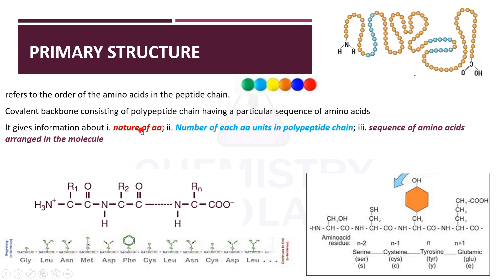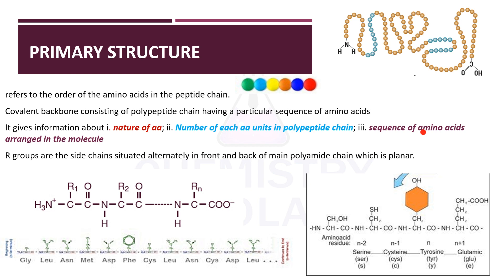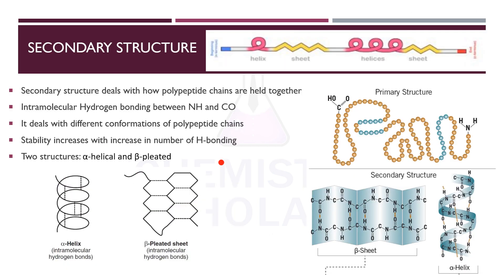The primary structure gives information about the nature of amino acids: which amino acids are attached, how many units are in the polypeptide chain, and the sequence of amino acids — whether a particular amino acid is repeated after a certain number. The R-groups are the side chains, situated alternately in front and back so that crowding is reduced. The entire polyamide chain is planar.